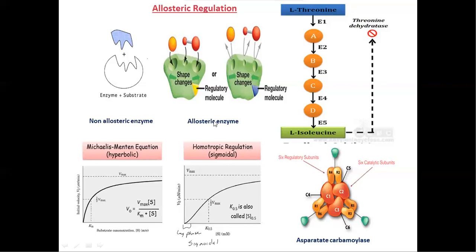An allosteric enzyme is of two types: homotropic enzymes and heterotropic enzymes. In homotropic enzymes, the regulatory molecules and substrate molecules are the same. In heterotropic enzymes, the regulatory molecules and substrate molecules are different in nature.